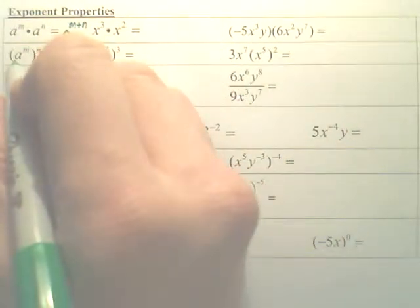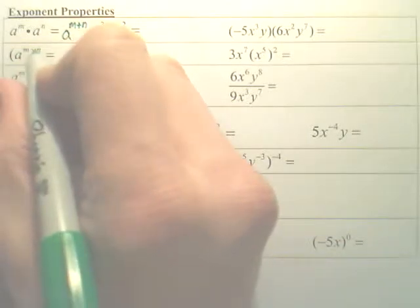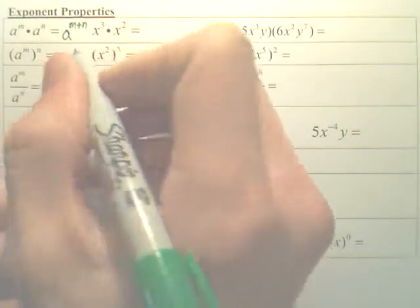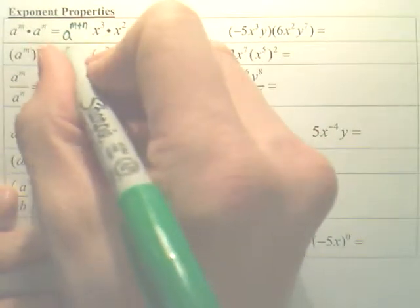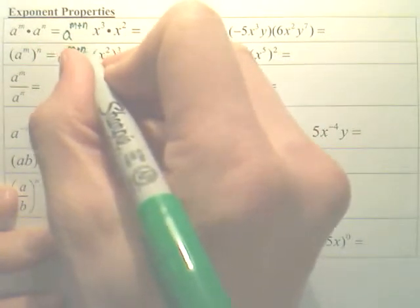When you have a power, A to some power, and you power that again, it's going to be A to the, instead of adding the powers, here you multiply them.